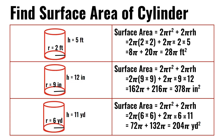For the third cylinder, the radius is 6 yards and the height is 11 yards. 2π(6×6) + 2π×6×11. 6×6 is 36; 36 times 2π is 72π. 6×11 is 66; 66 times 2π is 132π. 132π plus 72π is 204π yards squared.